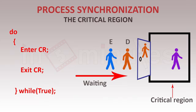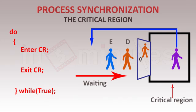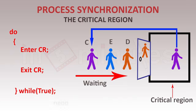From a programming perspective, entering the critical region involves a loop that monitors activity and runs as long as the process needs access repeatedly. When process C exits, it doesn't necessarily finish — it goes back to the queue to re-enter. The structure is essentially an endless loop running while true: first make a request to enter the critical region, and upon gaining access, perform the required task.